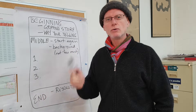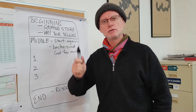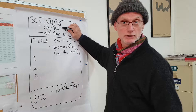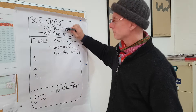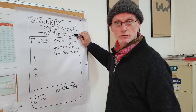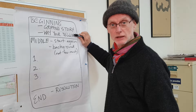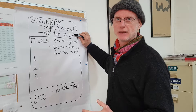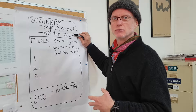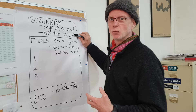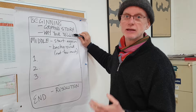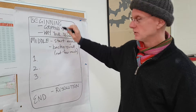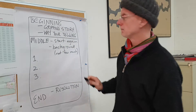Get your audience interested in your story straight away. Start with a gripping story. Then, once you've gripped them, tell them why you're telling them the story. What's it about? What's your basic premise? Why should they listen to what you're going to say? Tell them this briefly if you can, then you finish the beginning and you're ready to move on to the middle.